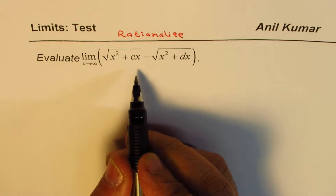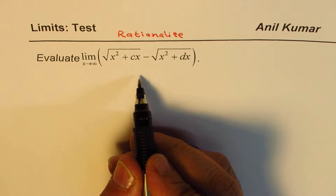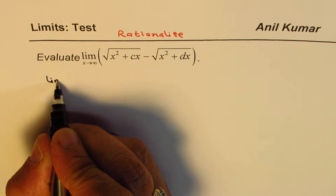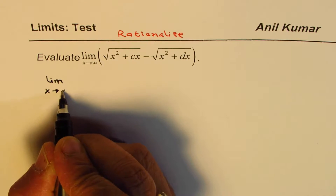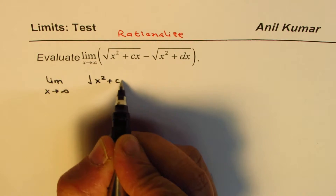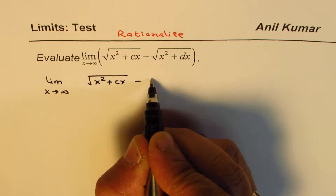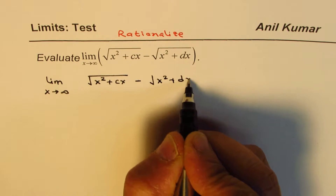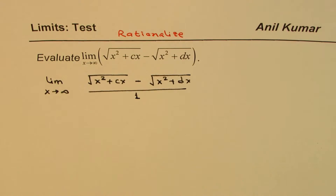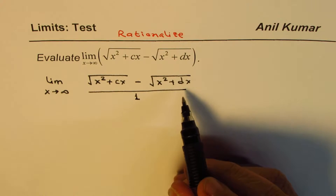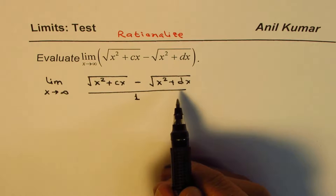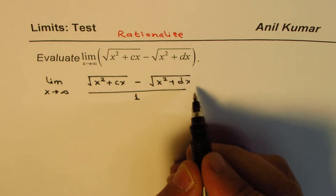Sometimes you feel as if there should be something over something so that you could rationalize the numerator or denominator. But in this case, think of there being a 1 in the denominator. So take this expression as the square root of x squared plus cx minus the square root of x squared plus dx, divided by 1. If you see it like this, you can clearly understand that you need to rationalize the numerator. So let's rationalize the numerator.